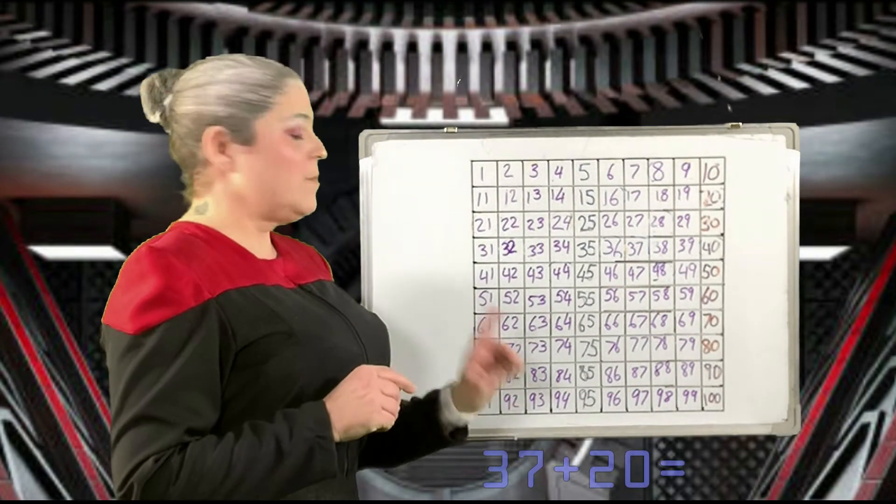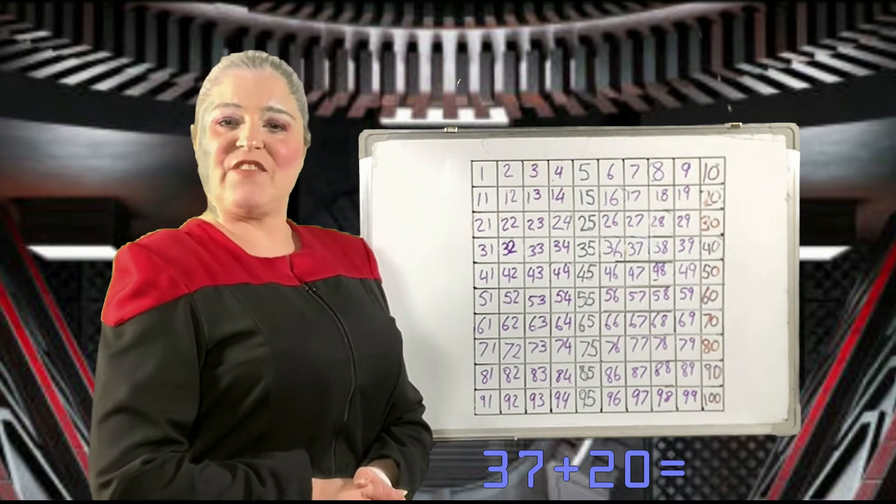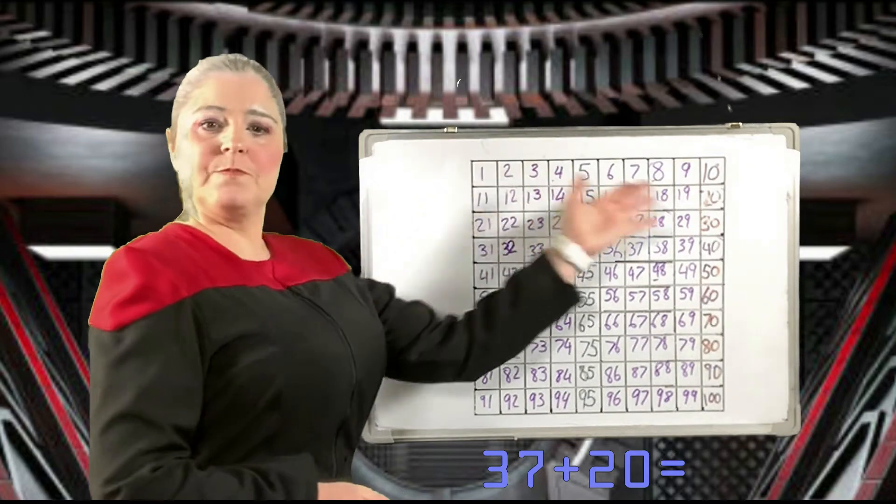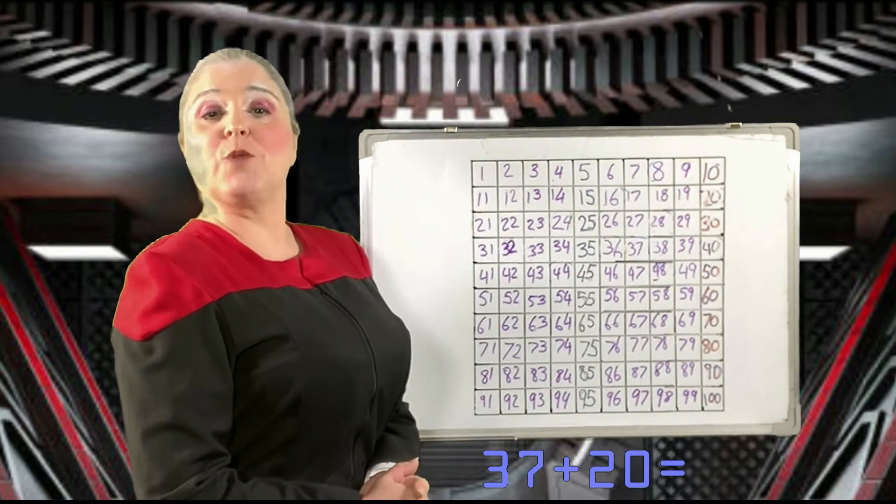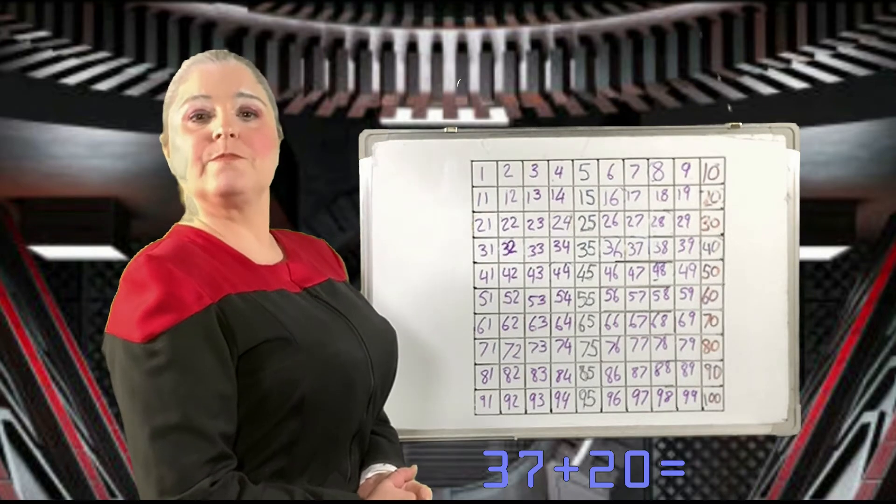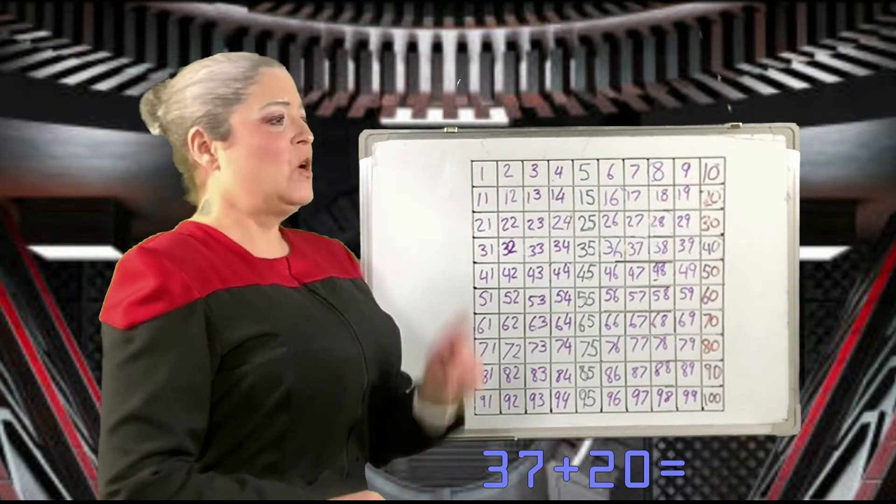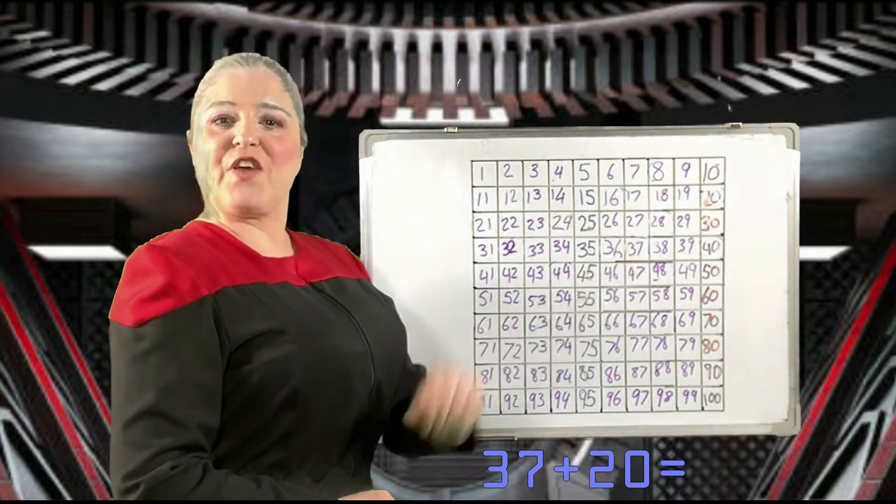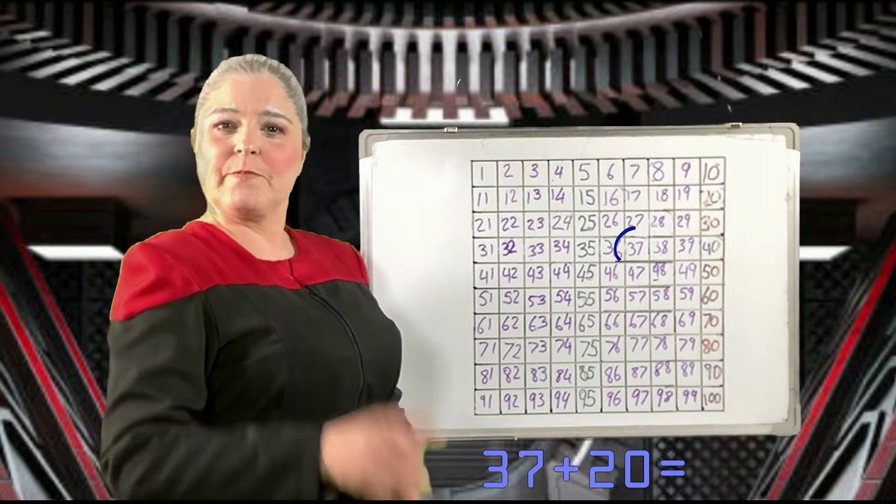Take a look at this sum: 37 plus 20. How can you use your number square to help you work out the answer? Very good. We start by marking the number 37 on our number squares. Then what?